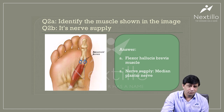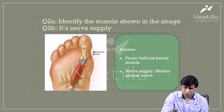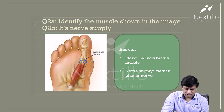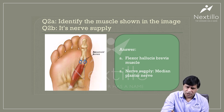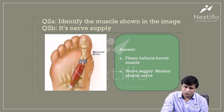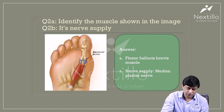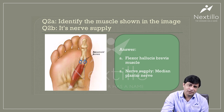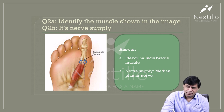The four muscles supplied by the medial plantar nerve are: abductor hallucis, flexor digitorum brevis — both from the first layer — then flexor hallucis brevis from the third layer, and the first lumbrical. That's four muscles supplied by the medial plantar nerve.